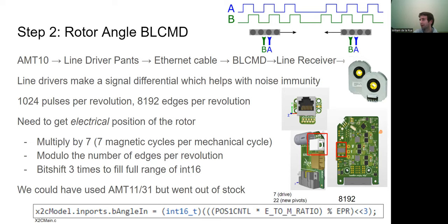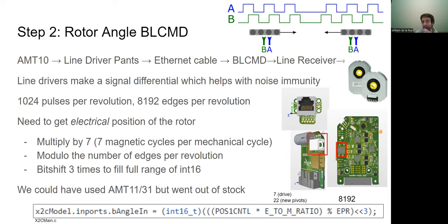To summarize the encoder chain: A and B signals from the encoder go through a line driver on the motor PCB giving original and inverted copies, through the Ethernet cable up through the suspension to the BLCMD. The four signals come into the line receiver which takes the difference to reconstruct A and B, which go directly into the PIC. The PIC counts edges cumulatively - counting forward and backward edges - and resets to zero when it reaches 8192.